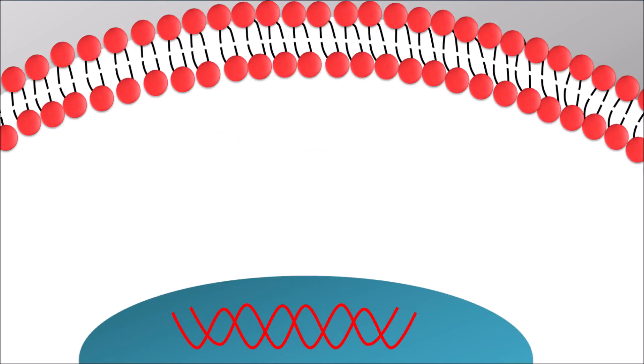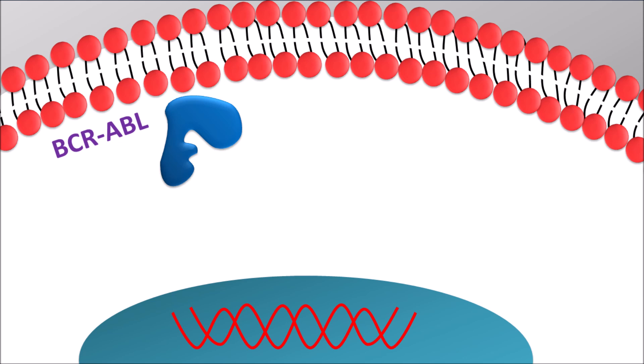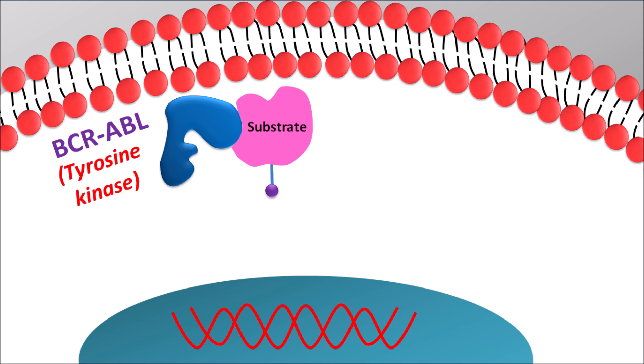Imatinib acts on the tyrosine kinase coded by the BCR-ABL gene. BCR-ABL produces fusion proteins having tyrosine kinase activity. This enzyme binds to a substrate containing a tyrosine residue, which is phosphorylated to produce cell signaling. ATP is required for this phosphorylation and binds to the ATP binding site on the tyrosine kinase enzyme. After binding, one phosphate molecule is transferred to the tyrosine residue, resulting in phosphorylation of the substrate.